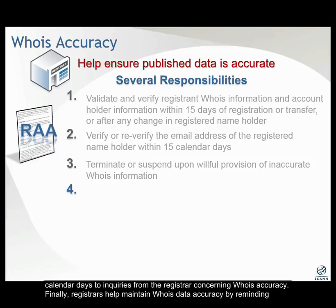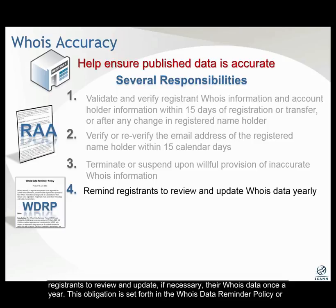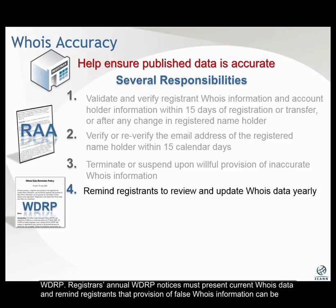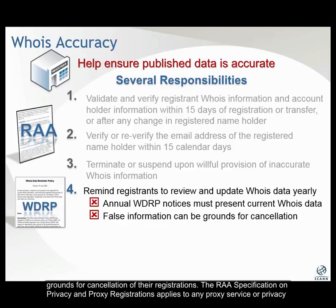Finally, registrars help maintain WHOIS data accuracy by reminding registrants to review and update, if necessary, their WHOIS data once a year. This obligation is set forth in the WHOIS data reminder policy, or WDRP. Registrar's annual WDRP notices must present current WHOIS data and remind registrants that provision of false WHOIS information can be grounds for cancellation of their registrations.